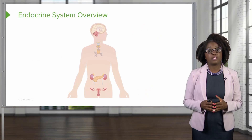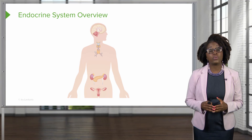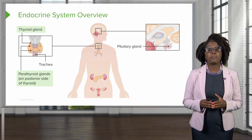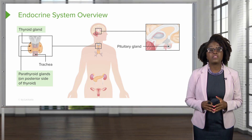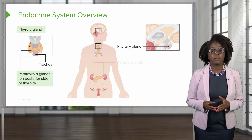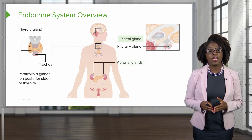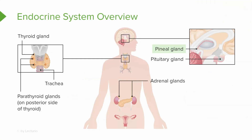The endocrine system is made up of several glands, including the pituitary gland found in the brain, the thyroid and parathyroid glands found in the cervical region of the body, the adrenal glands which are attached to the kidneys, and the pineal gland which is also found in the brain. The hypothalamus is also considered a neuroendocrine gland because it has both nervous as well as endocrine tissues and sends hormones to other endocrine glands.